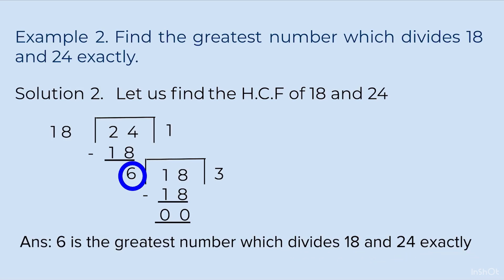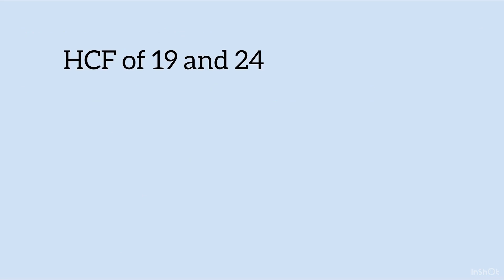I had made a video on tricks to find the LCM and HCF, but I missed one small trick: when a prime number is involved in the list of numbers for HCF. For example, if 19 and 24 were given, the HCF would be 1. So remember: if a prime number is in the set of numbers, the HCF of those numbers is going to be 1.